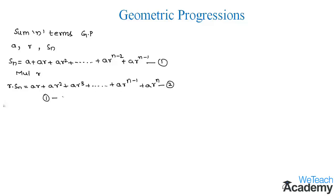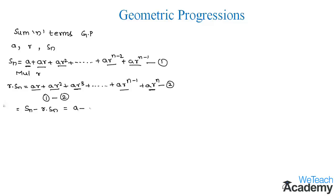Now let us subtract equation 2 from equation 1. On the left-hand side we get Sn minus r into Sn. On the right-hand side, ar minus ar cancels, ar squared minus ar squared cancels, ar cubed minus ar cubed cancels, and continuing this way ar to the power n minus 2 minus ar to the power n minus 2 also cancels.